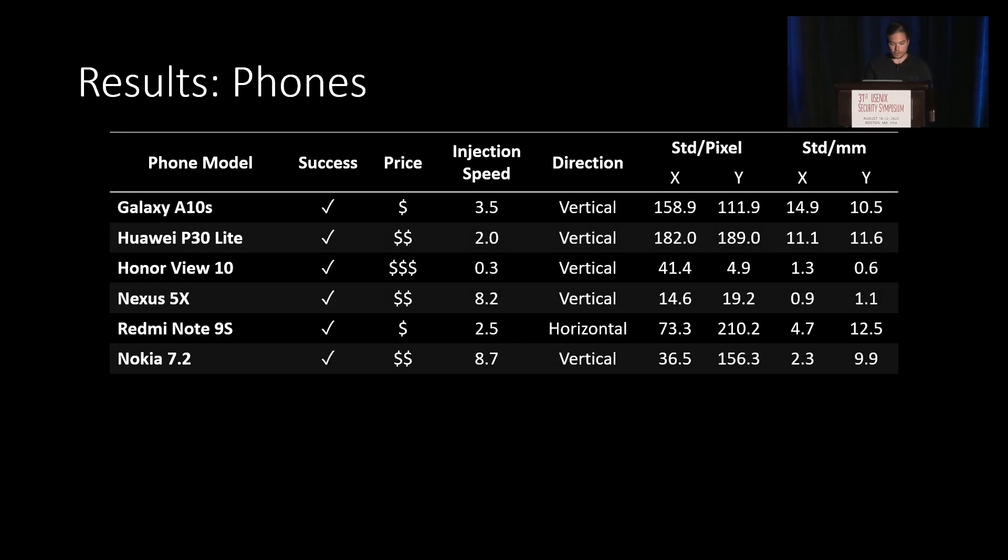So we also evaluated many smartphones. Here you can see six smartphones where our precise attack was possible. And for example, when you look at the Nexus 5X, you can see that we are able to inject up to 8.2 touch points per second, with a standard deviation of only 14.6 and 19.2 pixels on the X and Y axis.